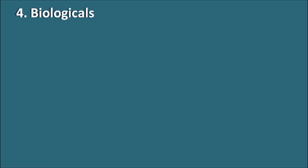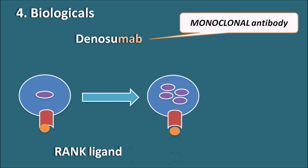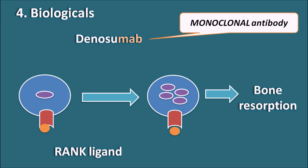The fourth type is the biologicals. One such drug is denosumab, where 'MAB' indicates a monoclonal antibody. Osteoclast progenitor cells have a receptor to which the RANK ligand binds. Once the RANK ligand binds to these receptors, they undergo modification, converting into multinucleated osteoclast cells responsible for bone resorption. Denosumab antagonizes the binding of the RANK ligand to this receptor, thereby inhibiting the conversion of osteoclast progenitor cells into multinucleated osteoclast cells, and thus inhibiting bone resorption.